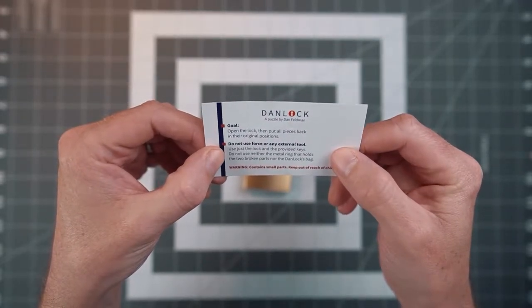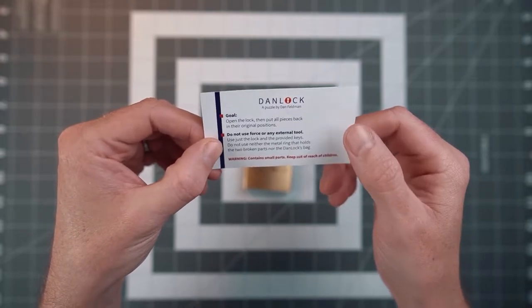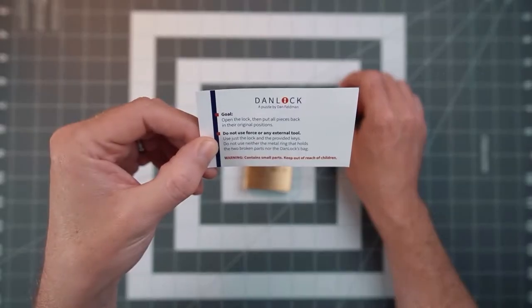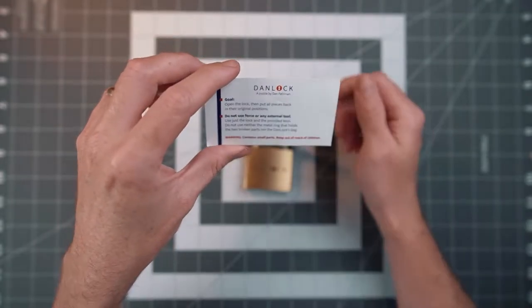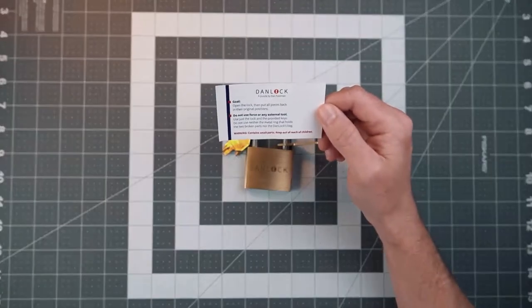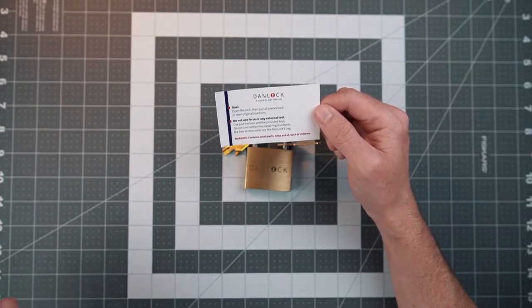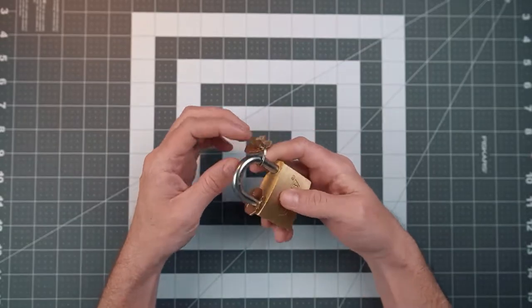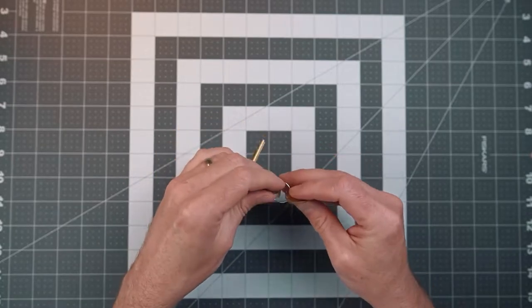Do not use force or any external tool, use just the lock and the broken keys. Do not use the metal ring that holds the two broken parts, and also do not use the bag. I can't use the bag, that's a shame, I was looking forward to it. Contains some small parts, so I guess I should start by just removing these broken pieces. Let's do that.